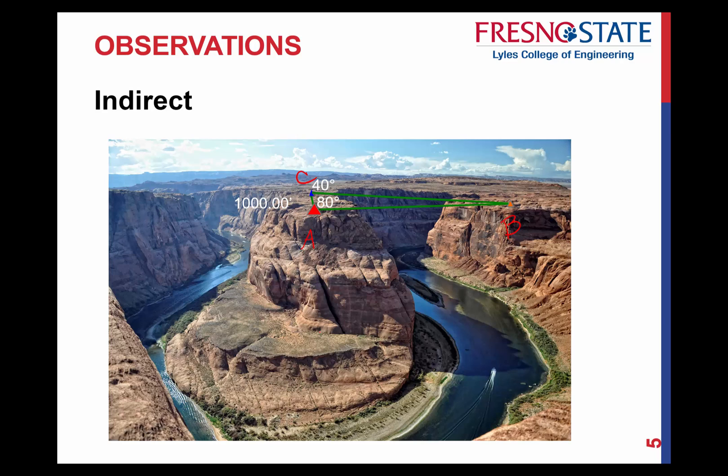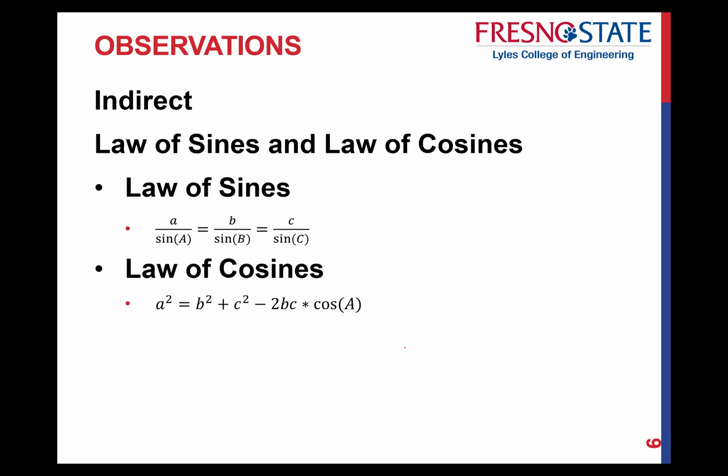And from that, from those measurements right there, which were all direct measurements, I can then get a distance which is not done directly of 1347.30 feet. So how do we do that? We do that with the law of sines, law of cosines. It's calculated. We take the measurements which we have and we can then come up with another solution.